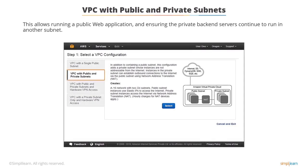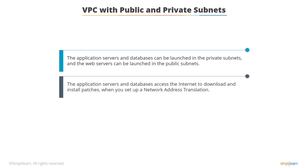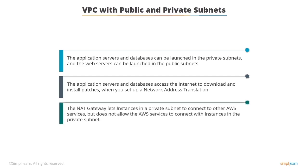VPC with public and private subnets allows running a public web application while ensuring private back-end servers continue to run in another subnet. You can use this scenario to host multi-tier web applications and enforce access restrictions between databases, application servers, and web servers through security groups and ACLs. You can launch application servers and databases in private subnets and web servers in public subnets. When you set up a NAT gateway, it allows instances in a private subnet to connect to other AWS services including the internet, but prohibits external services from connecting back to the private subnet, ensuring higher bandwidth with less administrative effort.